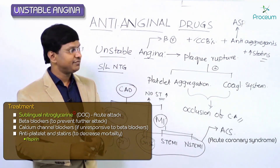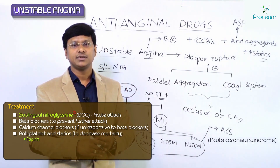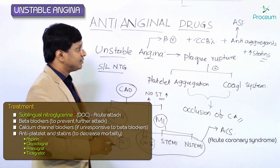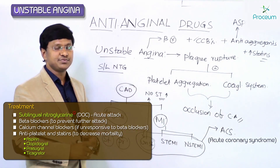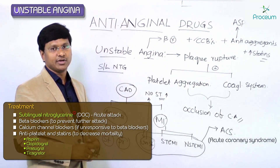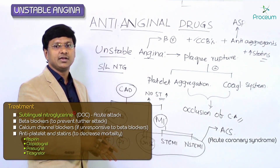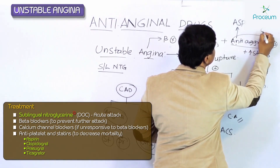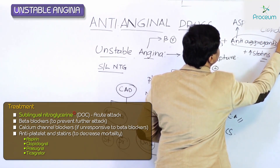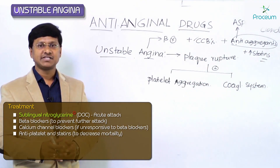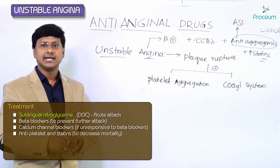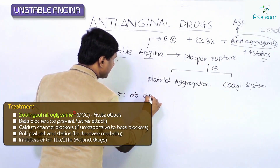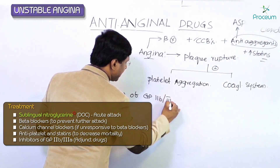Apart from aspirin, we have other anti-aggregants: clopidogrel, prasugrel, and ticagrelor. So the anti-aggregants being used include aspirin plus clopidogrel. Additionally, other drugs that can be given in patients with unstable angina are inhibitors of glycoprotein 2b/3a.